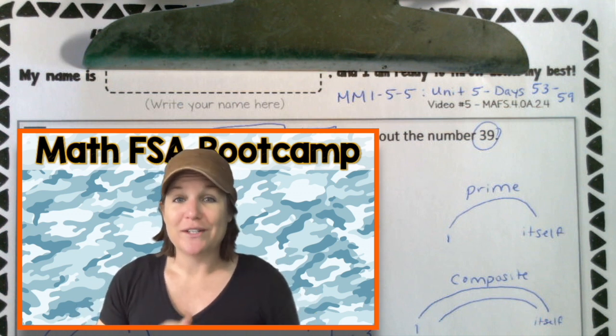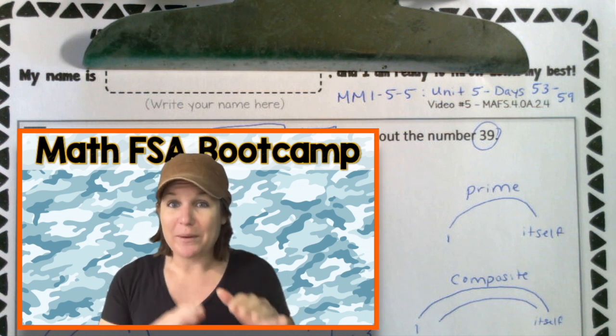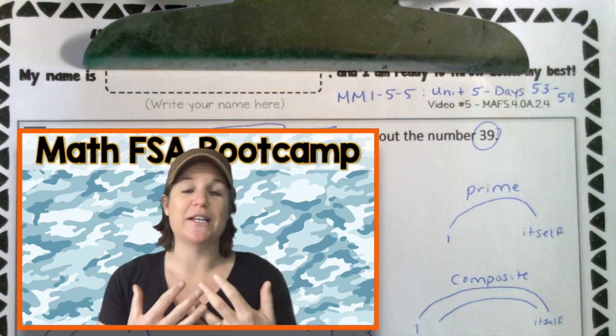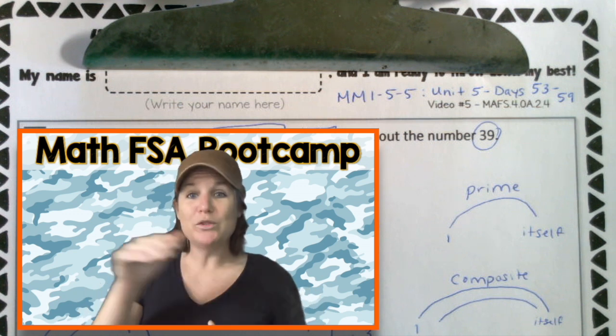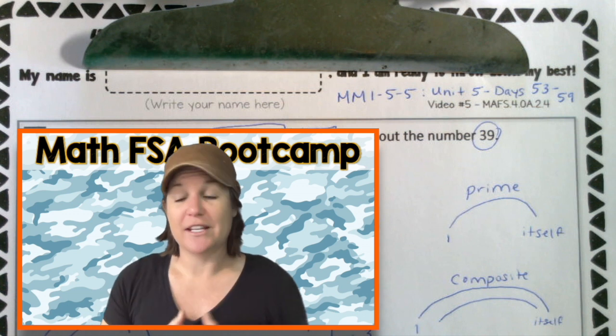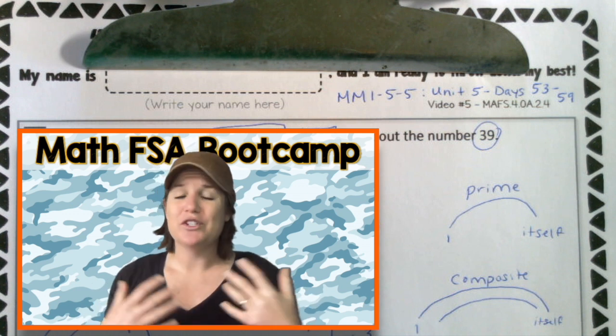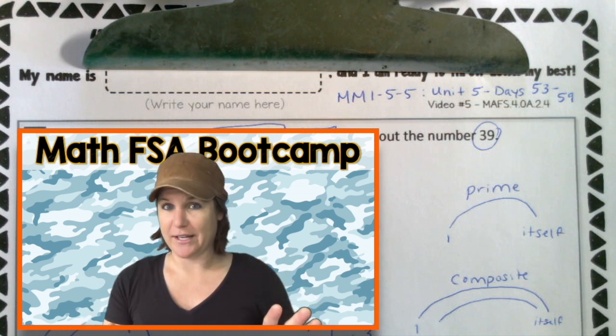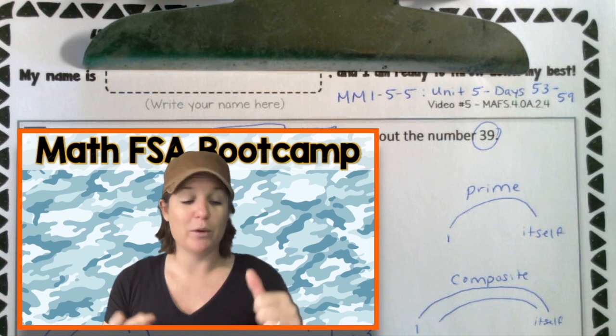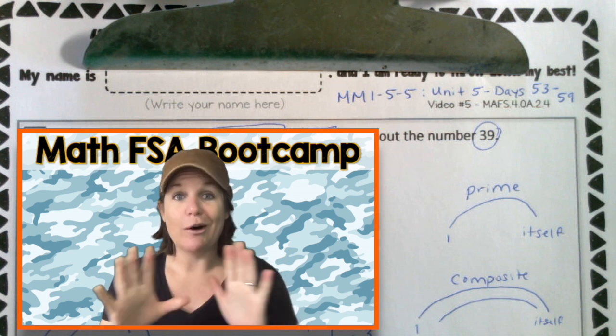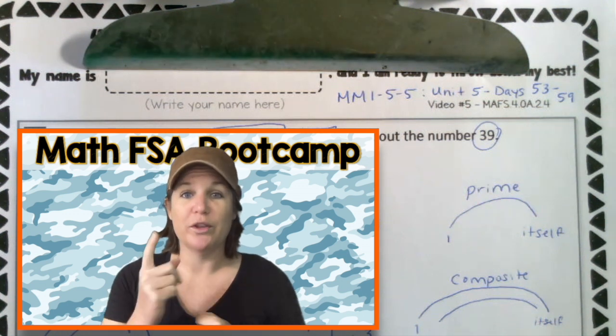The next link that I'm going to include is to the how to pass the math FSA series. This is a series that I created several years ago, but I created it back when it was going to be a computerized test. It's a paper based test now, which is why I'm creating the bootcamp to update some of the questions. However, the how to pass the math FSA series still has great questions for you. Third, the multiplication mashup. I use the multiplication mashup in this episode to help me with factoring, helping me with finding multiples. So definitely check out the multiplication mashup. It will help you to get more fluent with your multiplication facts.